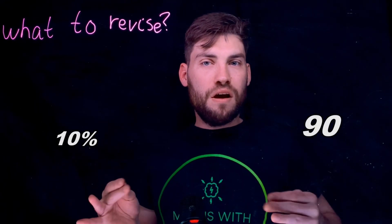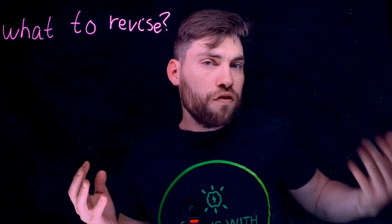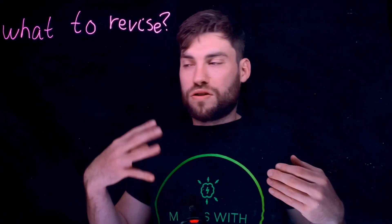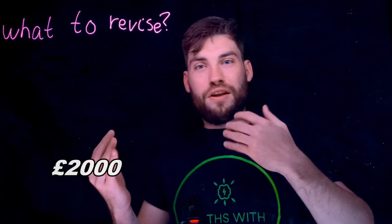The second section is percentages. That includes finding a percentage of a number — so you could be asked 10% of 90 — finding one number as a percentage of another, so what's 10 out of 60 as a percentage, and also compound interest and depreciation. So if you have a bank account and you put £2,000 in with 2% interest over five years, what will you have at the end?